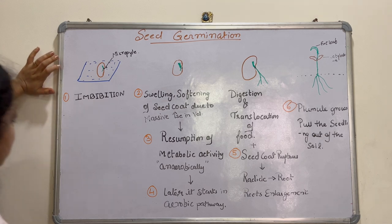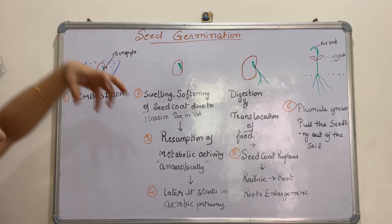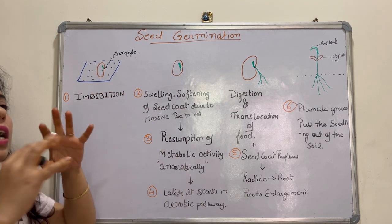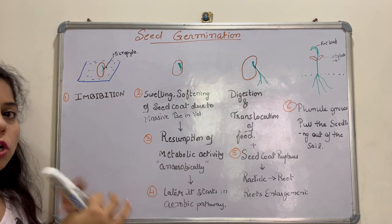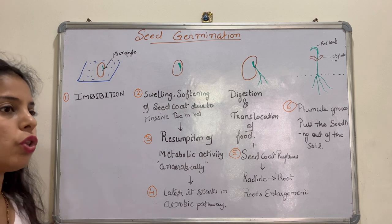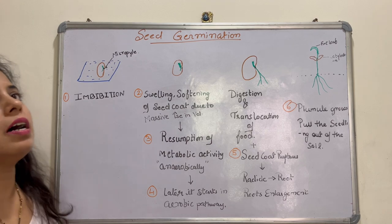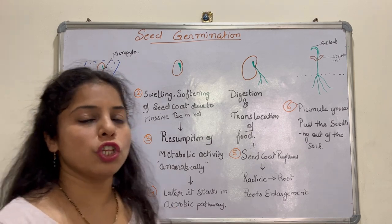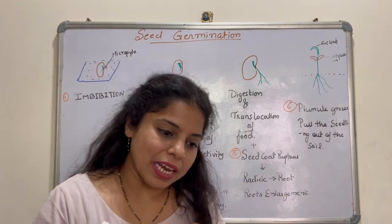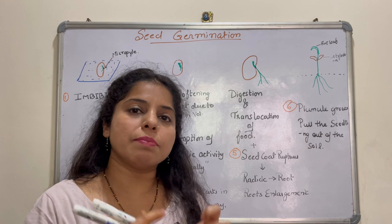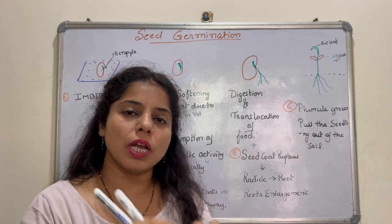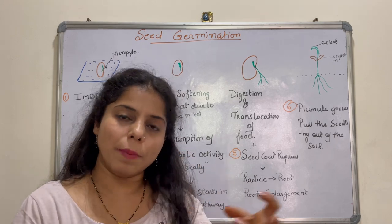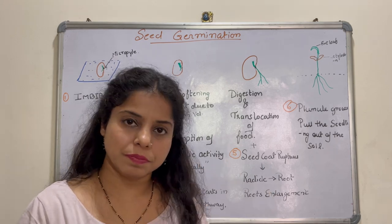And next to this, the seed imbibition process is a type of diffusion. The most important part is that water absorption starts from the seed coat through the micropyle.